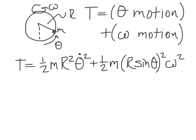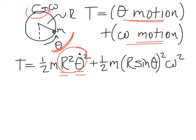For the kinetic energy term in the Lagrangian, we have two kinds of motion to think about. There can be motion along the theta direction — that's up and down the wire — and there's kinetic energy associated with the angular spinning of the hoop due to omega. The theta motion is easy to account for: we get one-half m r squared times theta-dot squared, since r is the radius of rotation about the theta direction and theta-dot is the angular velocity.